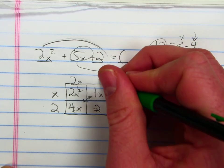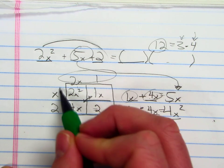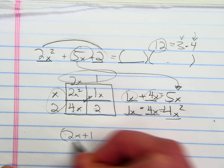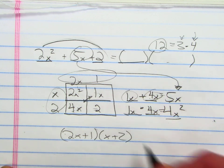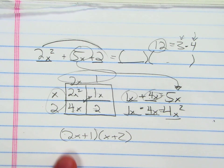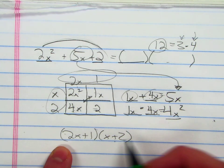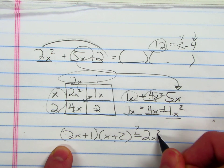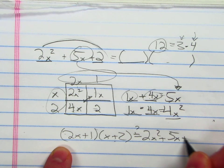So now I end up with my factors. My factors are 2x plus 1 times x plus 2. You should never miss a problem like this because I can always take my two factors and I can use my distribution method or my box method to multiply them back out and see if I get the answer that I want of 2x squared plus 5x plus 2. Thank you.